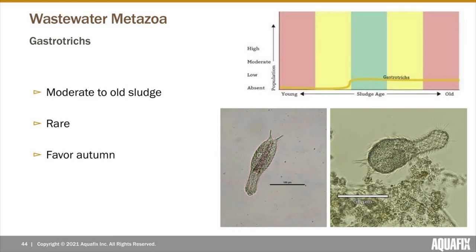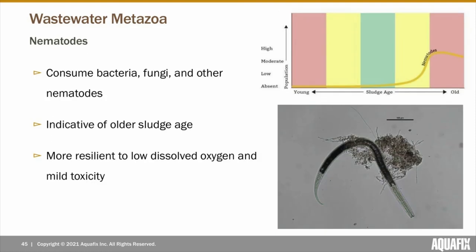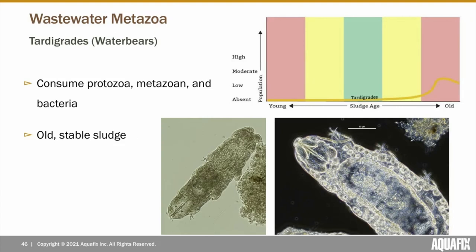Nematodes are a cylindrical-shaped metazoa that feed on bacteria, fungi, and other nematodes. If found in your wastewater plant, they indicate an old sludge age. They're also more resilient to mild toxicity and low DO compared to other metazoa, though their presence does not always indicate those conditions are present. Tardigrades, or water bears, have a plump body with eight legs and four claws used to rip open their food — such as rotifers, small nematodes, protozoa, and sometimes other tardigrades. If tardigrades are present, they're indicative of an extremely old but stable sludge age.